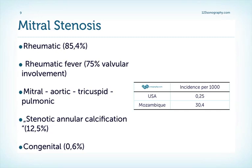Which valves are usually involved? It's almost always the mitral valve which is involved, followed by the aortic valve, the tricuspid valve, and very rarely the pulmonic valve. What other forms of mitral stenosis do we see aside from rheumatic heart disease? Well, stenotic annular calcification, especially in the older population, at approximately 12.5 percent — however, very rarely does stenotic annular calcification lead to severe mitral stenosis.